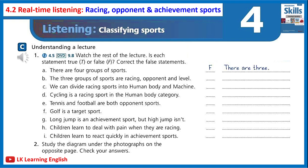What about the second group — opponent sports? Once again there are two subcategories. The opponent might be an individual or a team. For example, we usually play tennis against one person, but we play football against a team.